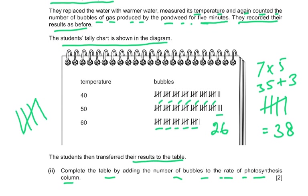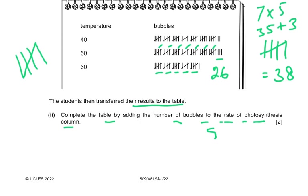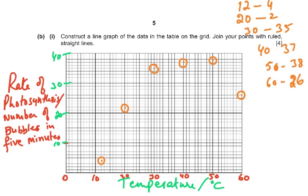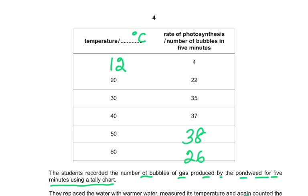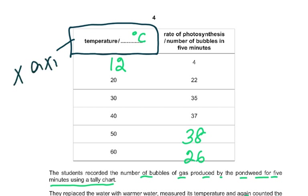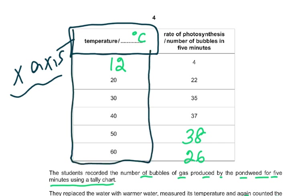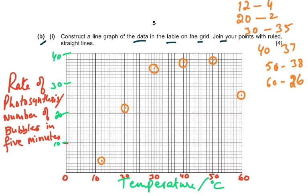Now part b1: construct a line graph of the data in the table on the grid and join your points with ruled straight lines. The first column always goes on the x-axis - temperature in degrees Celsius - and the rate of photosynthesis (number of bubbles in five minutes) goes on the y-axis. You must write the full labels on both axes with no abbreviations.